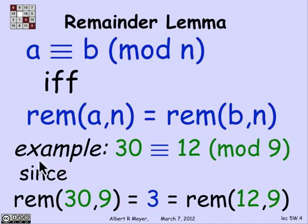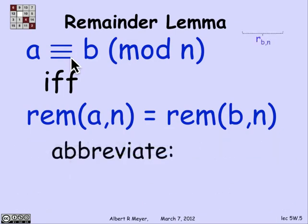This sign — the equivalence sign with three horizontal bars — is read as both 'equivalent' and 'congruent,' and I will be bouncing between the two pronunciations indiscriminately; they're synonyms. Let's think about proving this remainder lemma. In order to fit on the slide, I'll abbreviate the remainder of b divided by n as r sub bn.